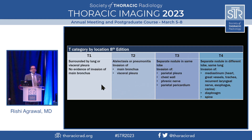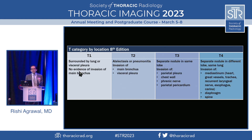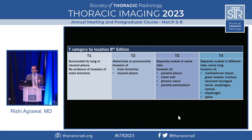Here's how T category breaks down by location. A T1 lesion is a tumor surrounded by lung or visceral pleura — just sitting in the middle of the lung. It can touch the pleura but cannot invade it. A T2 lesion invades the visceral pleura. A T3 lesion invades the parietal pleura and chest wall. A T4 lesion invades the mediastinum, diaphragm, or spine.